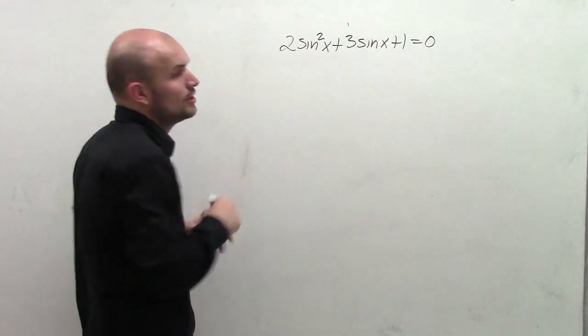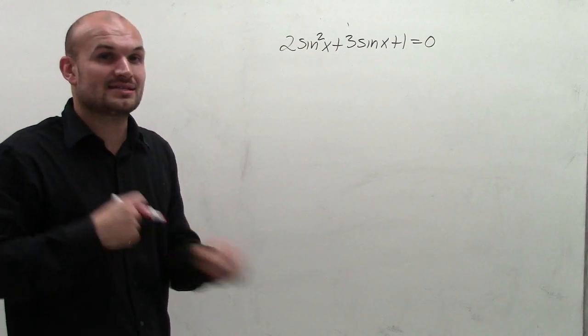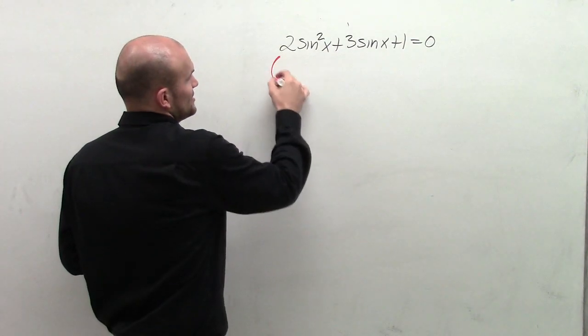That's going to be the same thing, because now my trig function is going to be squared. So I'm going to want to see, can I separate this, or can I rewrite this as a factored form? Which in this case, yes, you can.